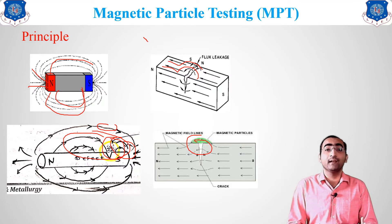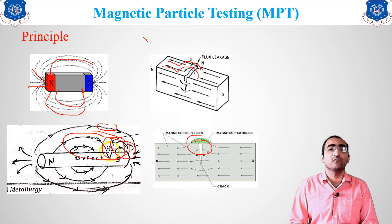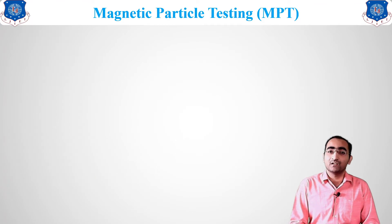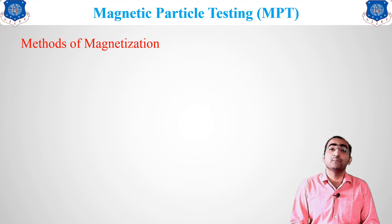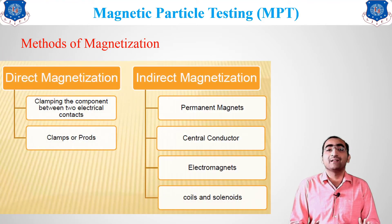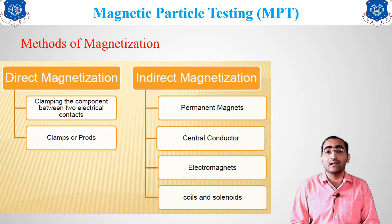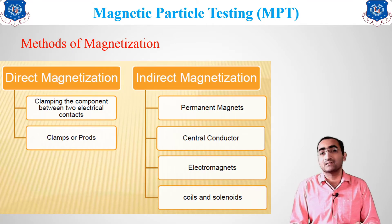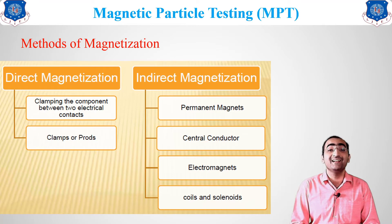So this particular method depends on the change in the magnetic field lines or the magnetic flux leakage. There are two methods for magnetization: the first is the direct magnetization method, and the second is known as the indirect magnetization method.